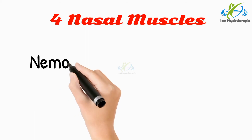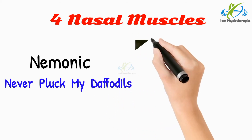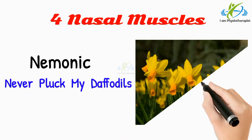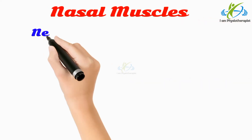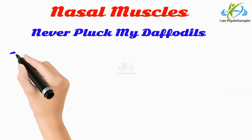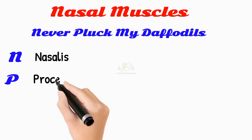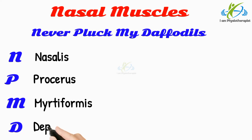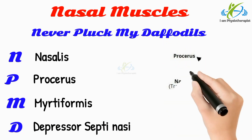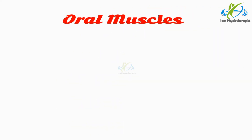There are four nasal facial muscles. The mnemonic for nasal muscles is 'Never pluck my daffodils.' N stands for nasalis, P stands for procerus, M stands for myrtiformis, and D stands for depressor septi nasi.